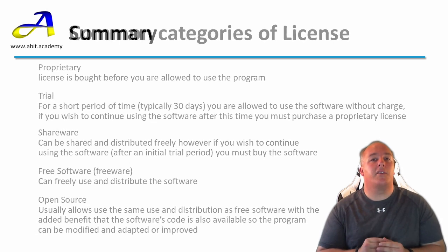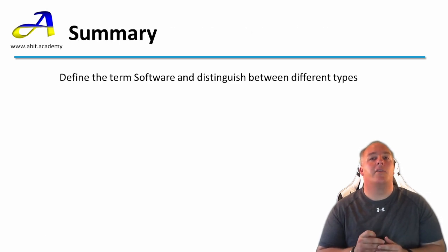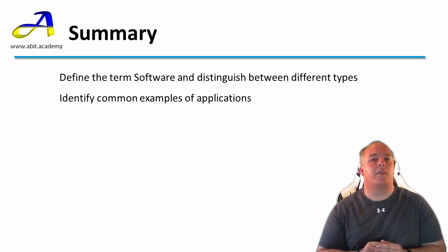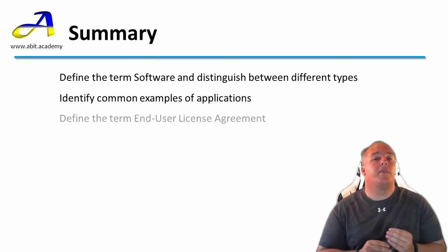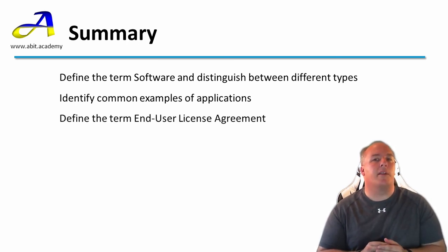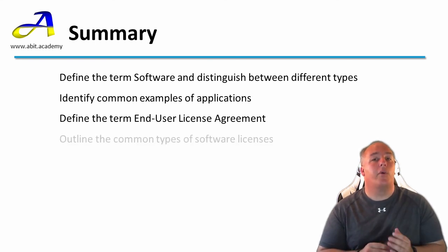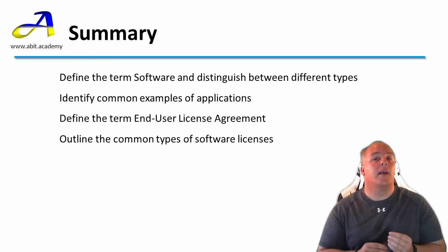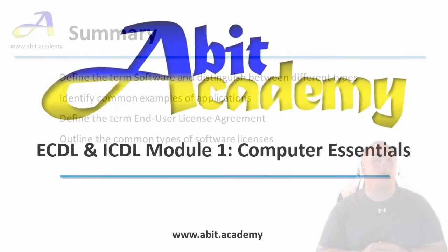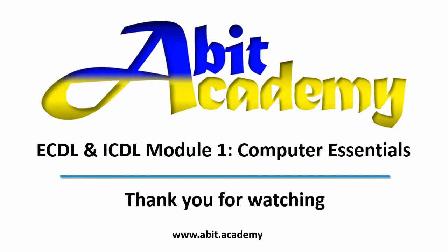In this lecture we have defined the term software and looked at many different examples and the categories they fall into. We've defined the term EULA — End User Licence Agreement — and established that you don't purchase software but instead you license it. We've finished by looking at several different models of software licensing including proprietary and open source. Thanks for watching, see you in the next video.